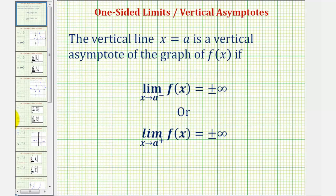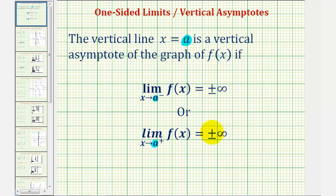The vertical line x equals a is a vertical asymptote of the graph of f of x if the limit as x approaches a from the left of f of x equals plus or minus infinity, or if the limit as x approaches a from the right of f of x equals plus or minus infinity. So if either of these two one-sided limits equals plus or minus infinity, then x equals a would be a vertical asymptote.